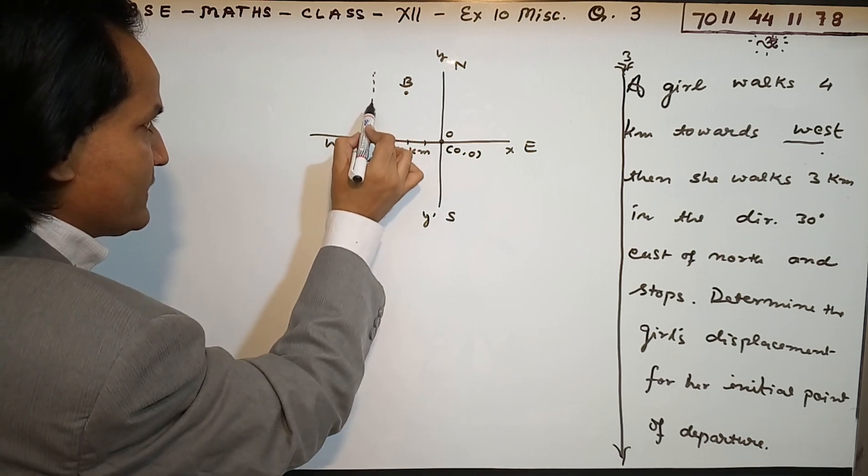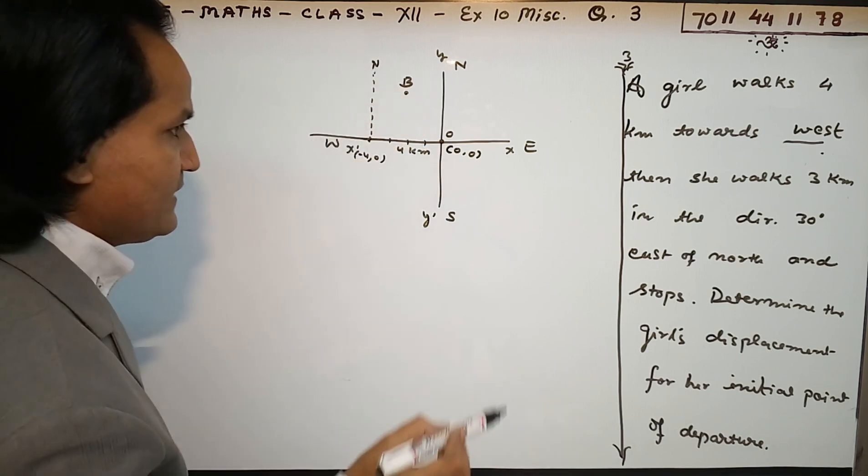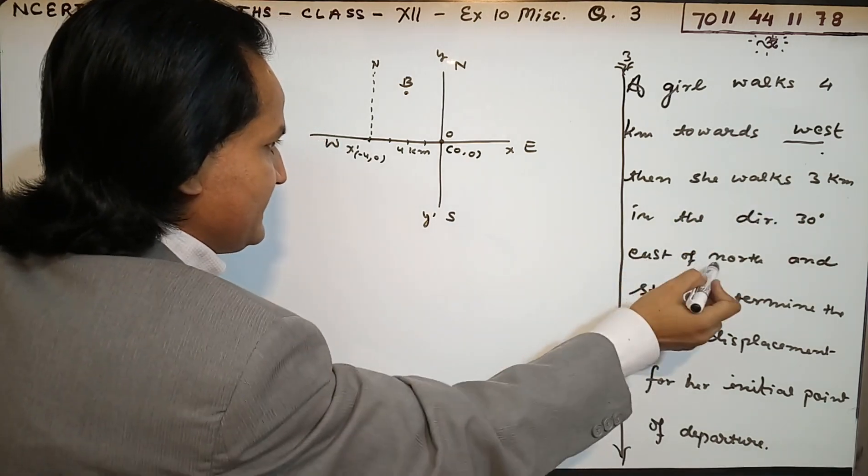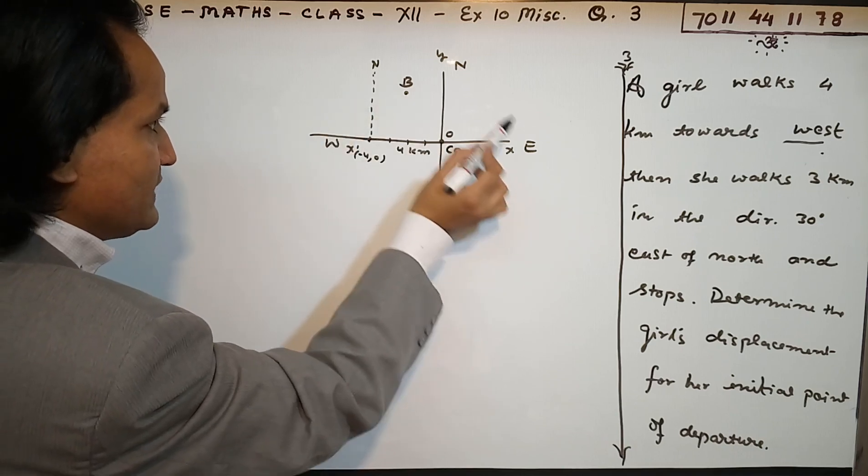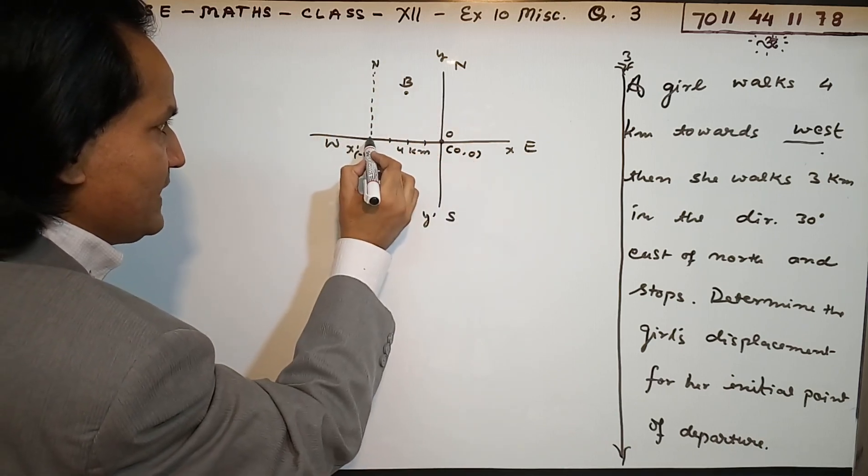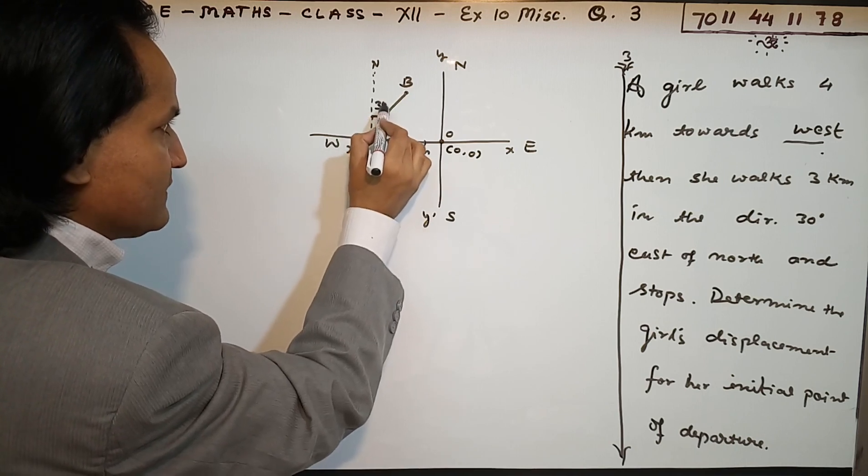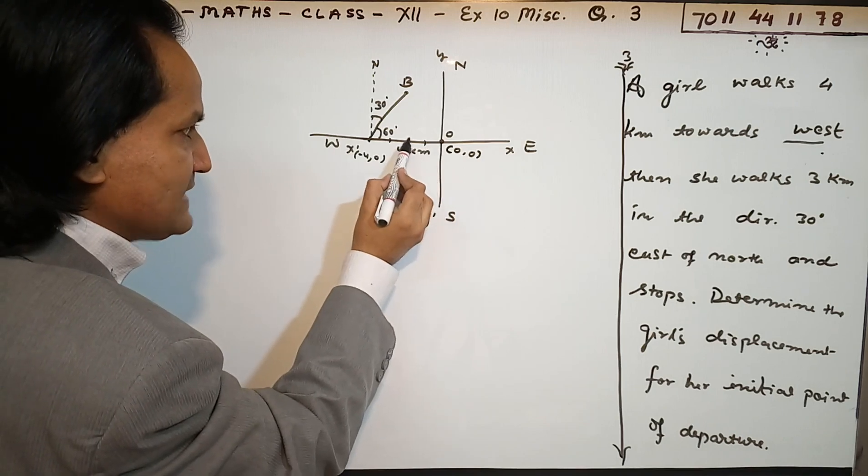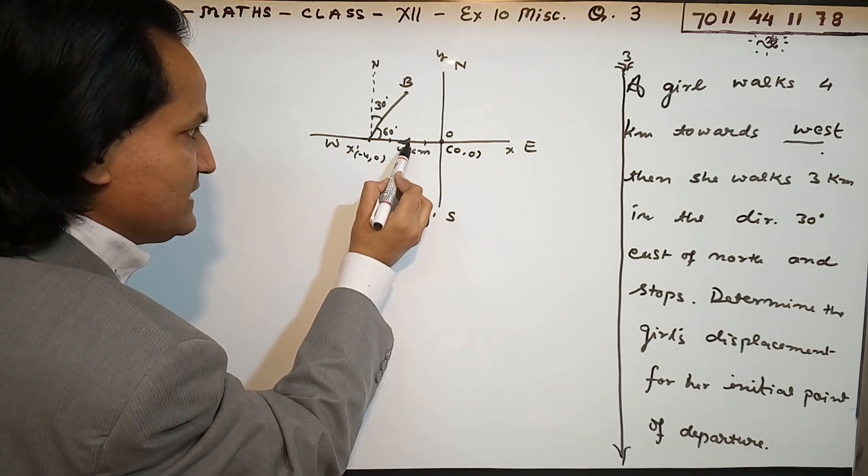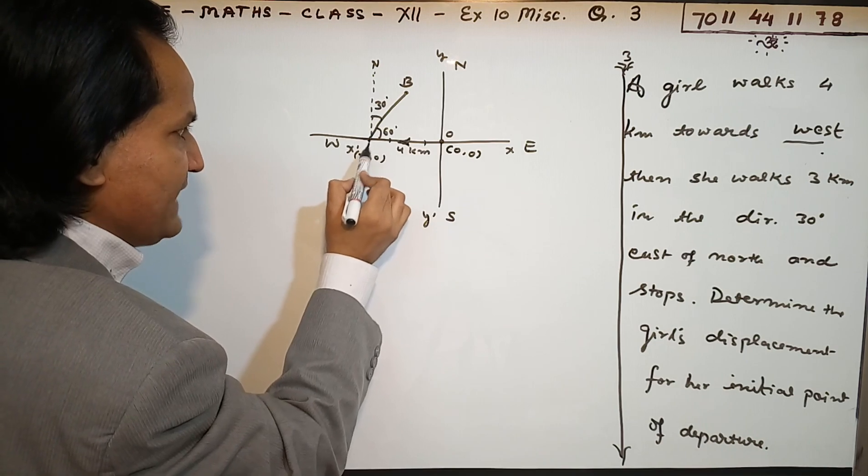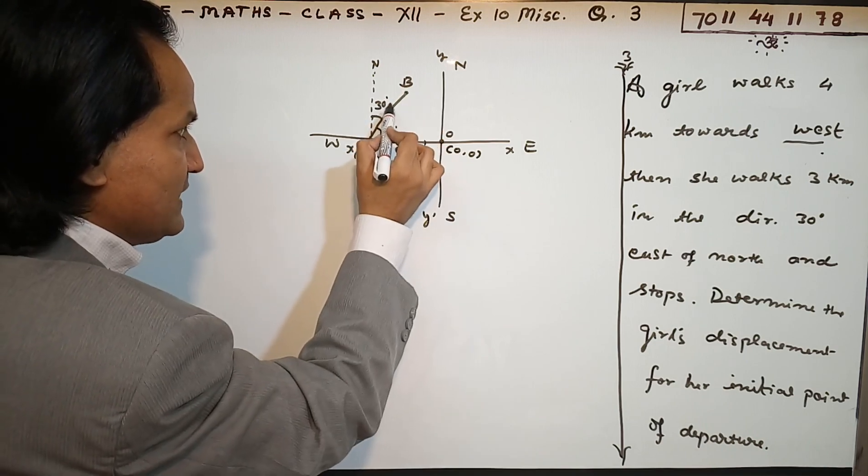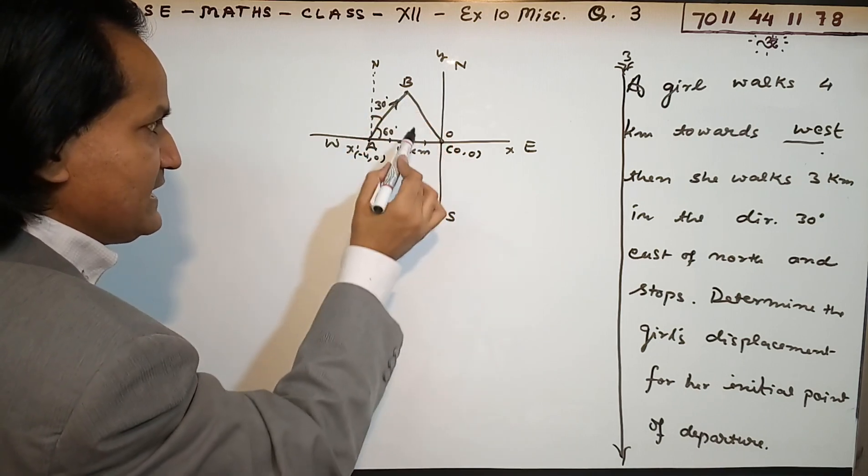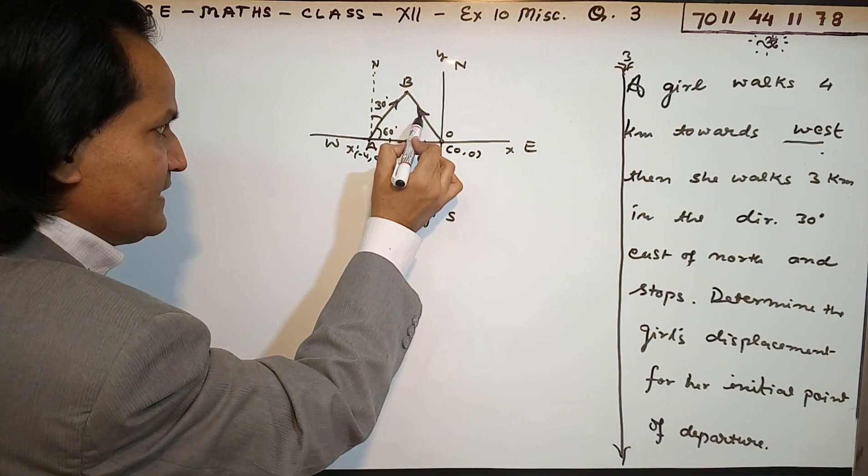Now she walks 3 kilometers in the direction 30 degrees east of north. One more time I'll draw the north direction and 30 degree direction - 3 kilometers in the direction 30 degrees east of north. Here is 30 degrees.